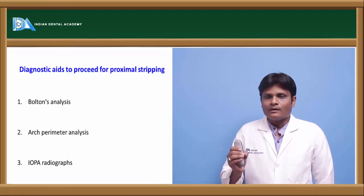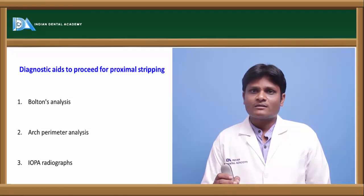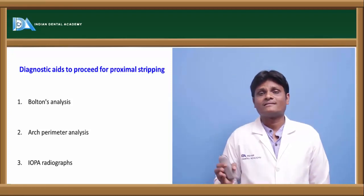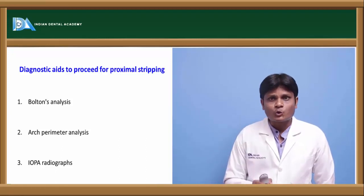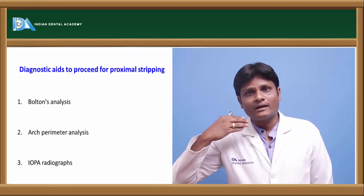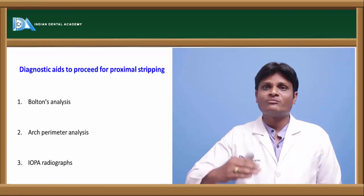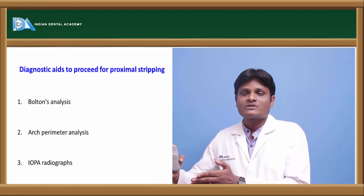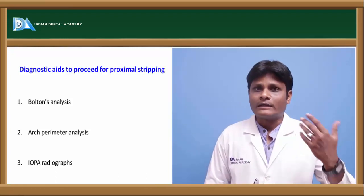A clear indication of minimal space requirement through Bolton's analysis and arch perimeter analysis is a major diagnostic tool in deciding whether the required arch length can be achieved by proximal stripping, and whether the space gained is sufficient to correct the malocclusion present in that individual.